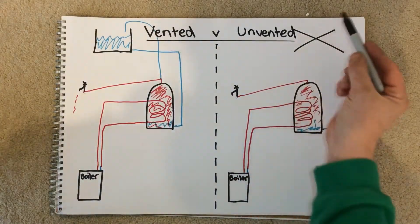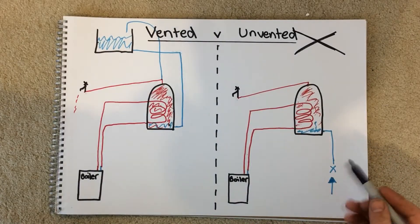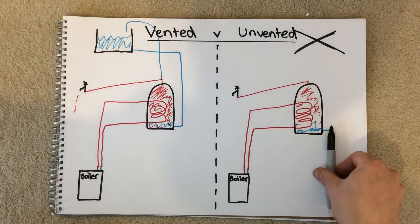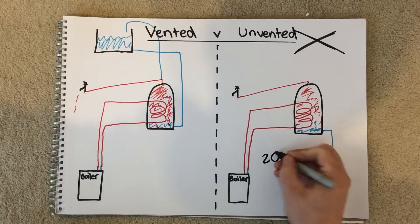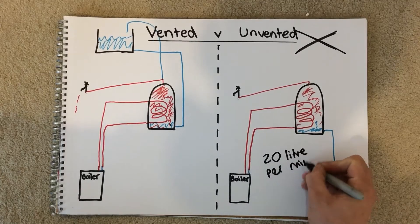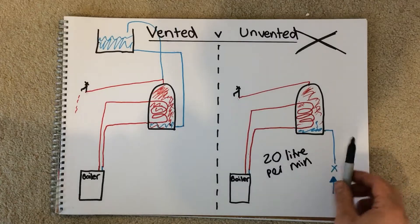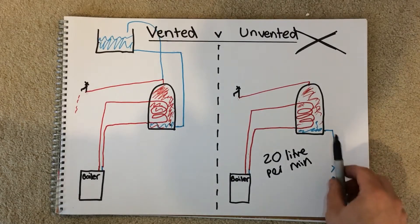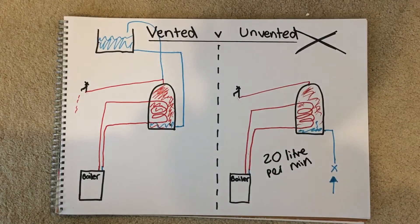Your unvented does away with the tank in the loft and it's fed via the mains in the ground. What you do need though is a minimum of 20 litres per minute. The main reason for this is to make sure that there's enough demand coming into the cylinder to supply your taps and your showers in your house.